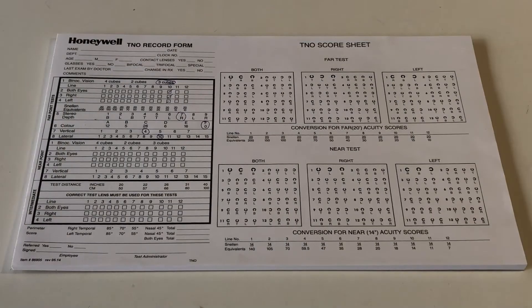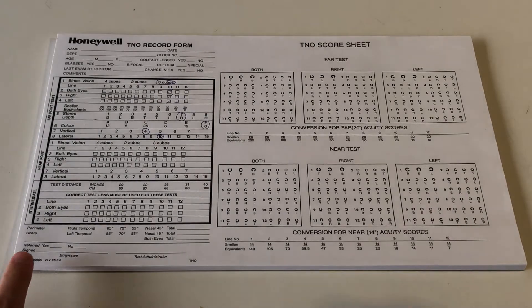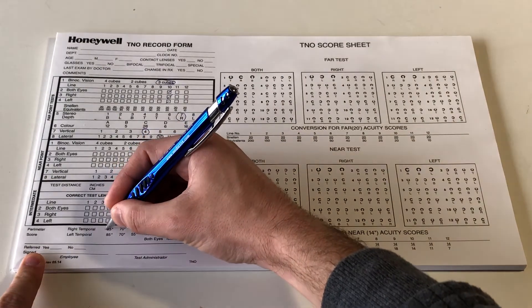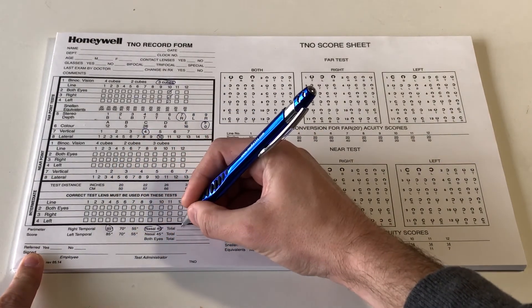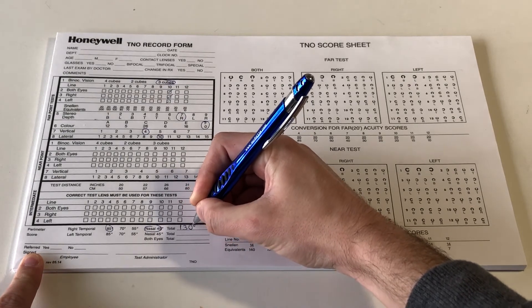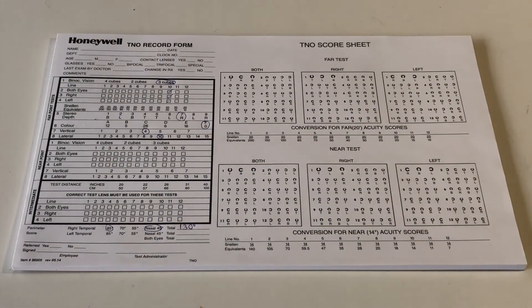On the record form, we record the total field of vision the patient was able to perceive, which is the temporal results added to the nasal result. For example, if the patient was able to see all of the lights, their temporal field of vision would be 85 degrees and their nasal field of vision would be 45 degrees, for a total of 130 degrees.